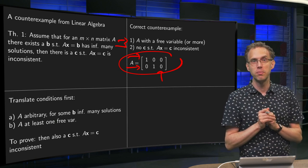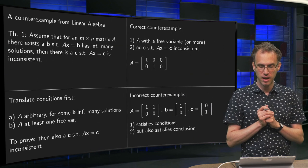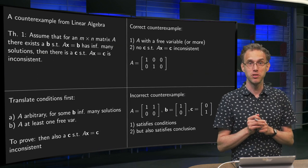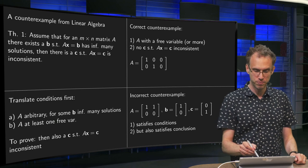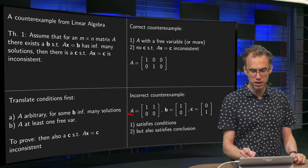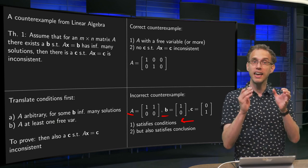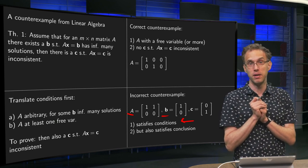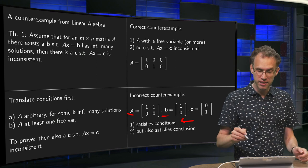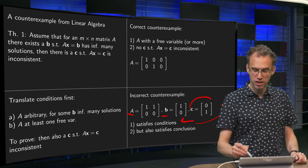Now, why were there so many problems for the students? Well, many used incorrect counterexamples like this A over here. So they picked this A and this B. So you do satisfy the conditions. Ax = B has infinitely many solutions. And then they picked a C like this.